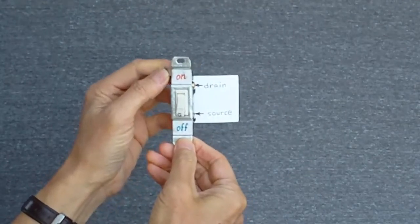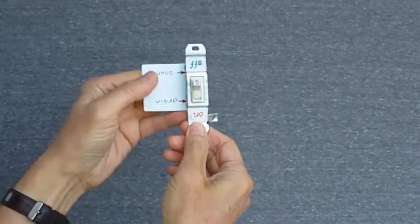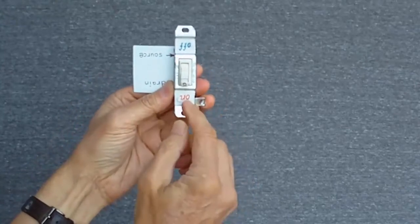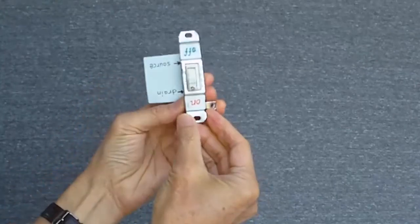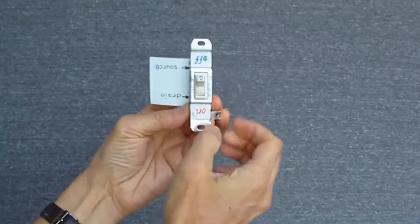If I turn the switch upside down, I get the model of the PMOS transistor. When I apply a low voltage to the gate, the source and drain are connected. When I apply a high voltage, the source and drain are disconnected, exactly the opposite of the NMOS transistor.